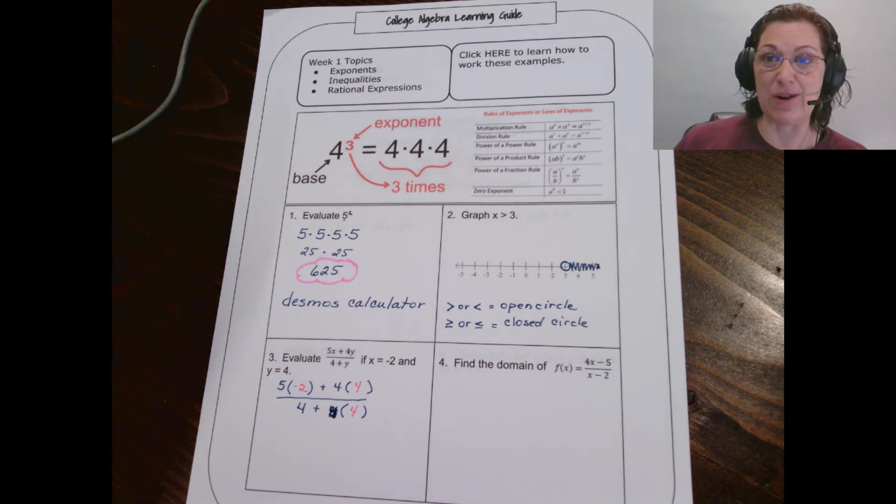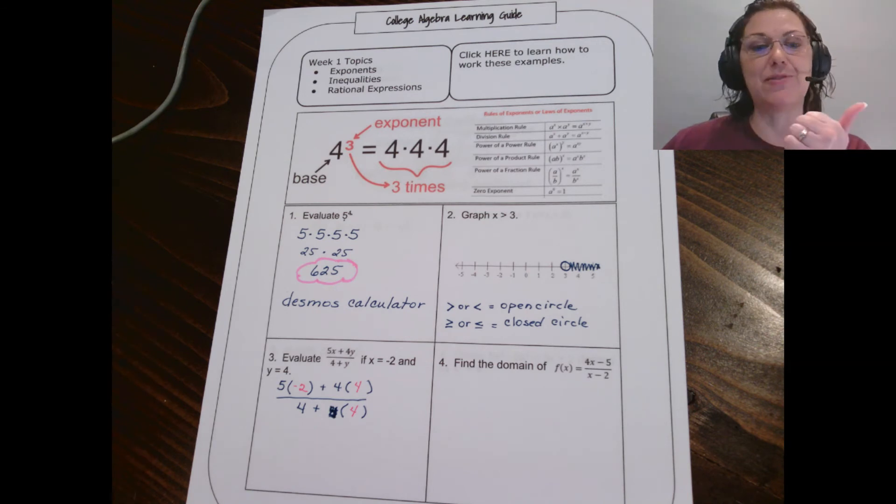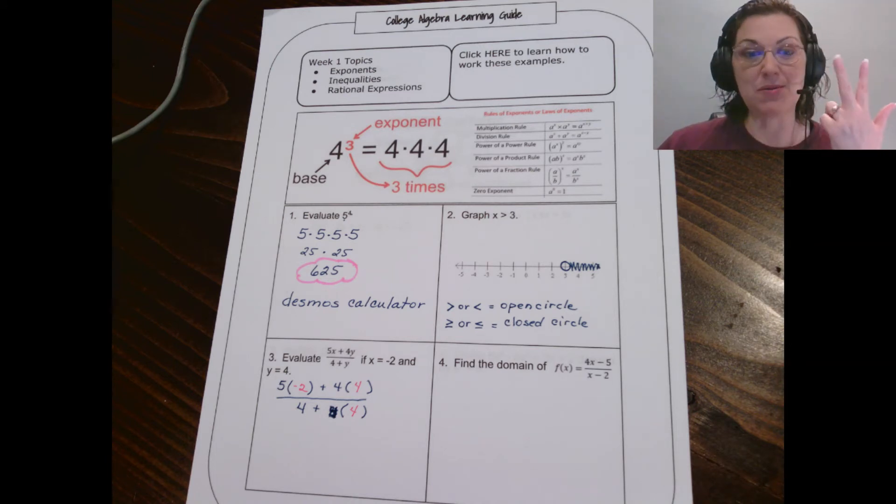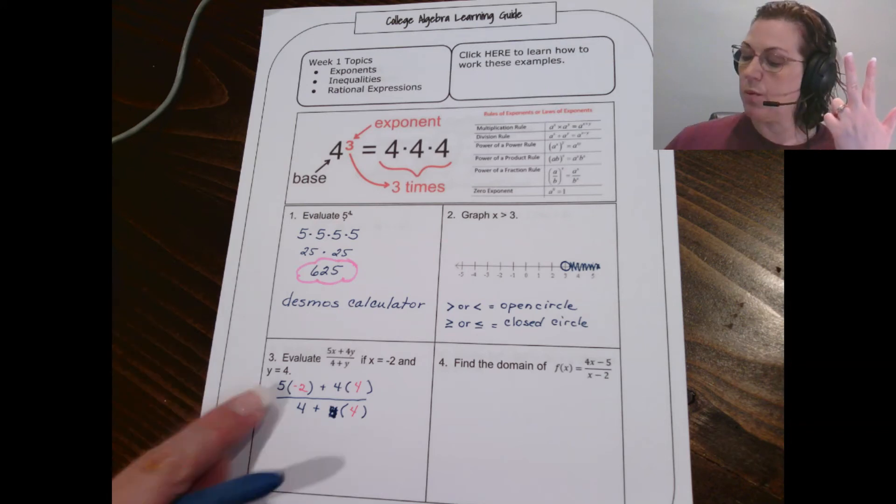Now if you remember from video one, we talked about order of operations. We still have to follow that order, and that order tells us that we have to do parentheses first. Well, while we do have parentheses in here, there's nothing going on in the parentheses but a number, so we get to skip that stop. I don't have any exponents going on, so now I'm going to multiply. When we write a number in front of a parentheses, that means to multiply. So I've got 5 times negative 2, which is negative 10. I've got 4 times 4, which is 16. And then in the denominator I've got 4 plus 4.